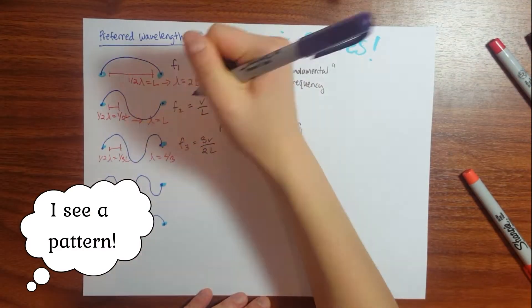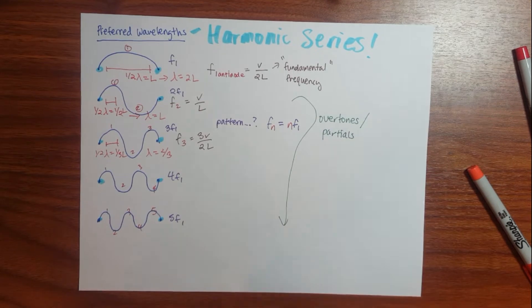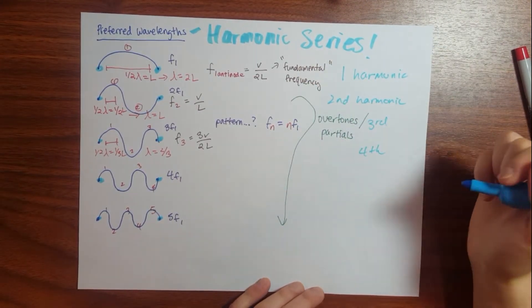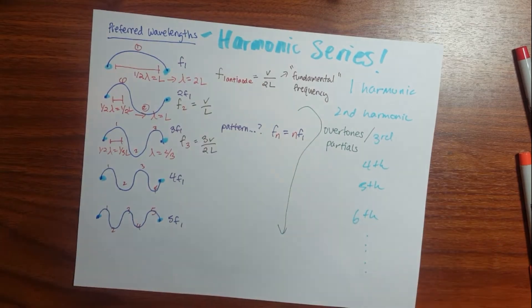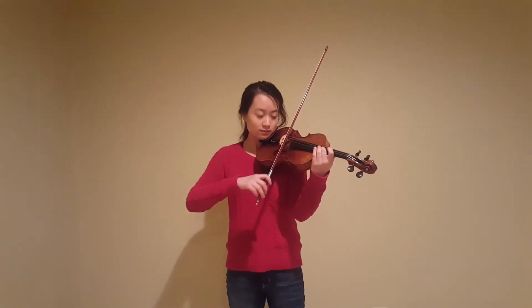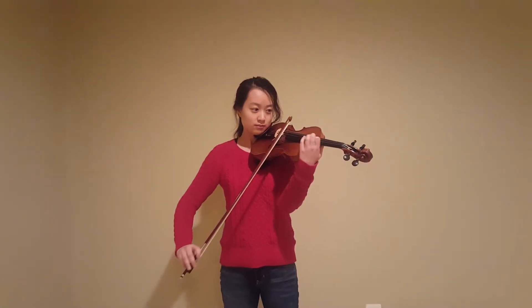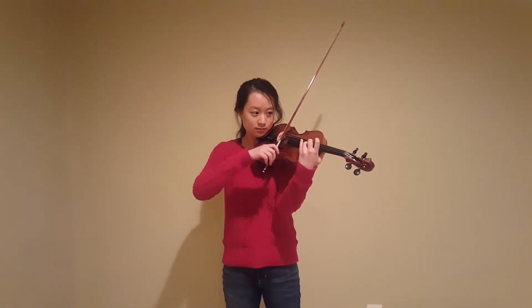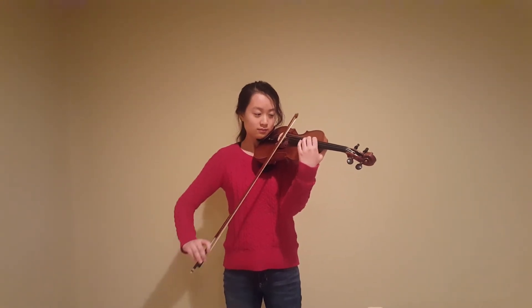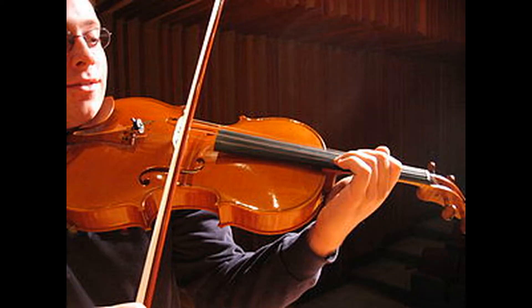The frequencies higher than the fundamental are called overtones or partials. Each possible frequency is also called a harmonic, with the fundamental being the first, and the first overtone being the second harmonic, and so on. When a musical note or pitch is played, you are hearing the superposition of the fundamental plus the overtones. However, depending on the instrument, the relative strength of each overtone differs. This is why a violin sounds different from a french horn or piano — and always sounds better than a viola.